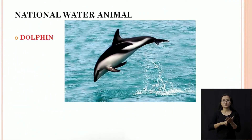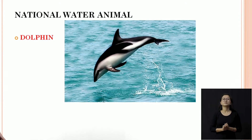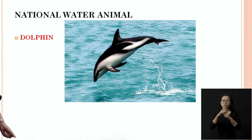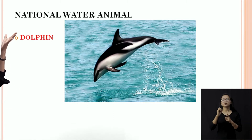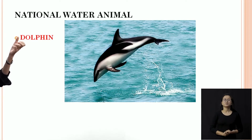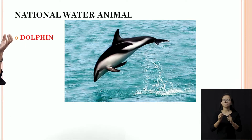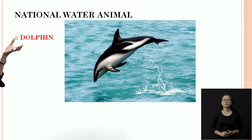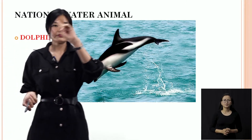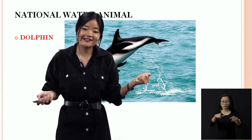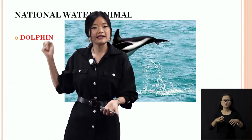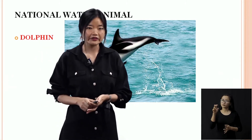So this is the national water animal of India. And the name is dolphin — D-O-L-P-H-I-N, dolphin. So let me check your memory power: the national land animal is tiger, and the national water animal is dolphin. Do not forget that.